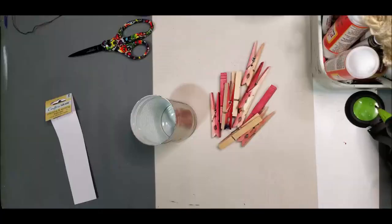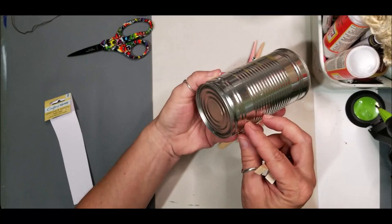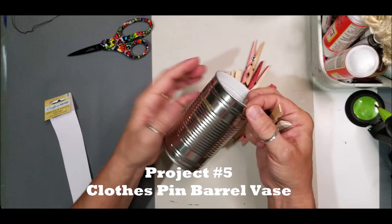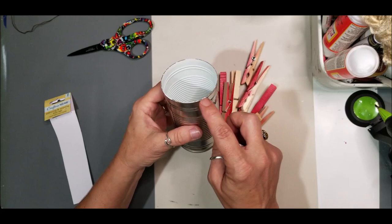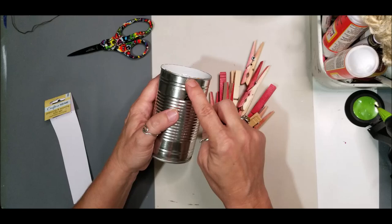For this project, I'm going to use my clean tin can. If you don't know how to get it so you don't have a sharp edge, there is actually a can opener you can use. I've had mine for years from Tupperware, but they have them on Amazon. It clamps down and unadheres the lid so it's clean and not sharp.